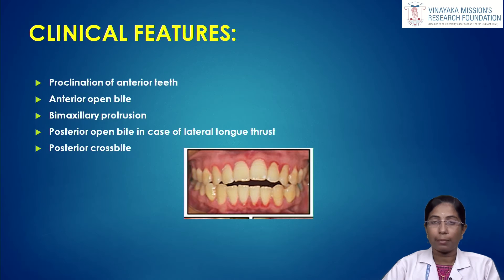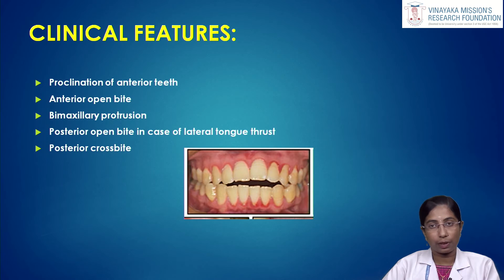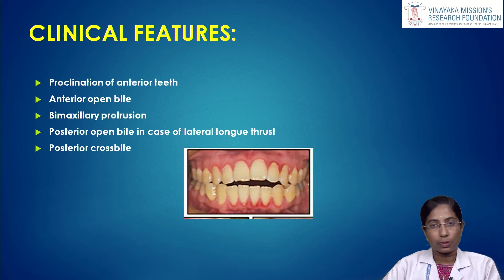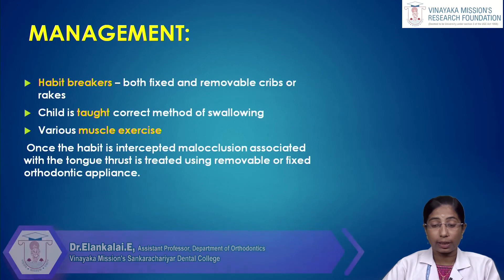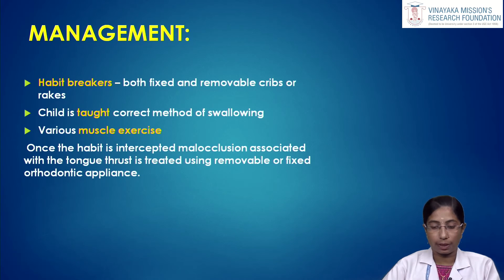Other clinical features include posterior cross bite. Simple tongue thrust results in malocclusion that is mostly correctable. Complex tongue thrust is very difficult to correct orthodontically. Management includes fixed and removable habit breakers such as cribs or rakes. The child is taught the correct method of swallowing, and various muscle exercises help prevent the habit. Once intercepted, malocclusion is treated using removable and fixed orthodontic appliances.